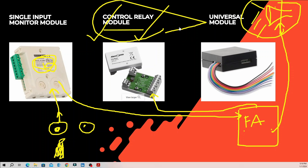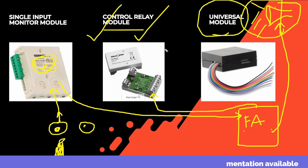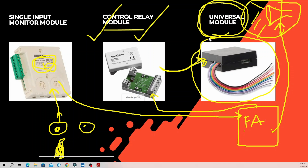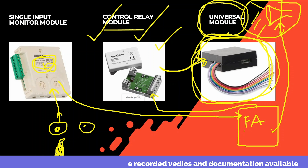Now we have the universal module. What do we say about the universal module? The control relay module controls the electrical system, HVAC system, lift, and doors — they are closed. When we stop and close this option, the control relay module will send signals to the universal module. The universal module is the main purpose connected to the control relay module. When we use the universal modules in the MEP system and the fire alarm voice evacuation system, we use the functions of this module and can integrate the modules together.